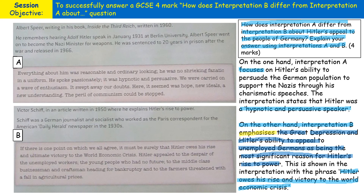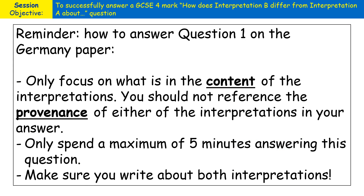You don't want to spend any longer than five minutes writing your answer to this type of question. A quick recap on the main tips: only focus on the content of the interpretations and what the main argument is. Don't reference the provenance — don't write about where the interpretations come from, who made them, or the date they were made. Only spend a maximum of five minutes answering this question. And make sure you write about both interpretations.